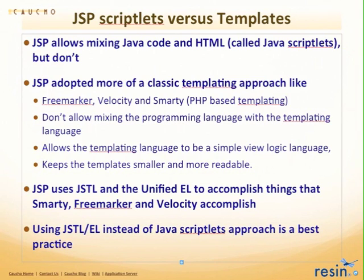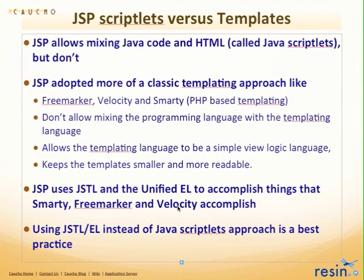It turns out scriptlets can make pages that are very hard to modify. Things like Model 2 and templating help achieve a better division of work so pages are more maintainable. Even though scriptlets exist and you can mix Java right into a JSP page, it's not recommended. We're going to use JSTL and the unified Expression Language, which make JSP work more like PHP Smarty, FreeMarker, or Velocity — templating engines where you can't just mix the programming language directly. It's simplified view logic but powerful enough.